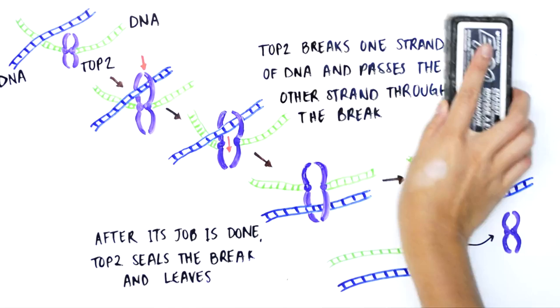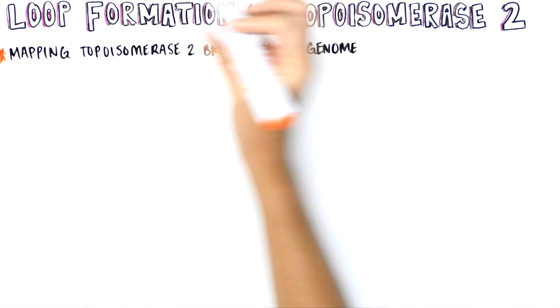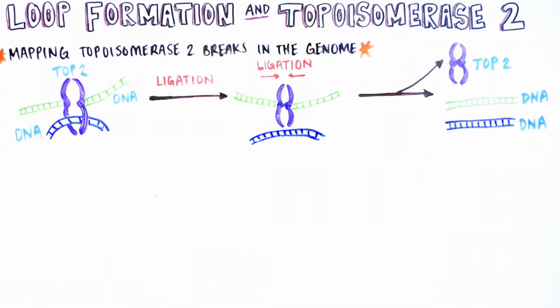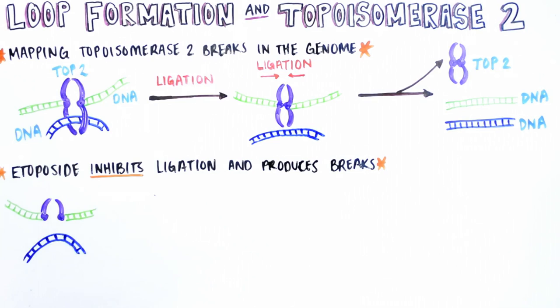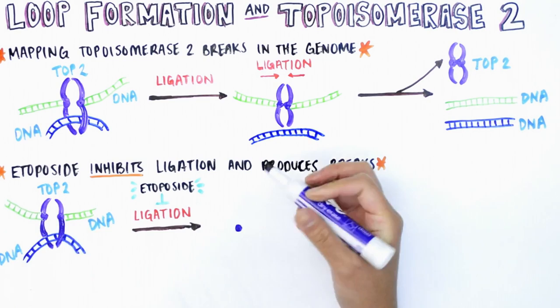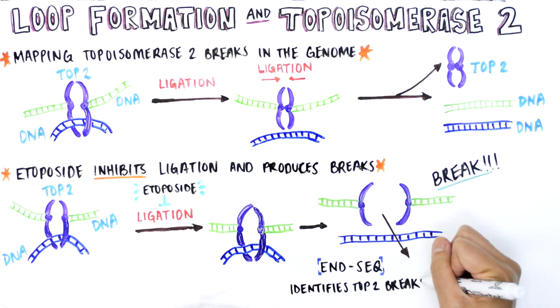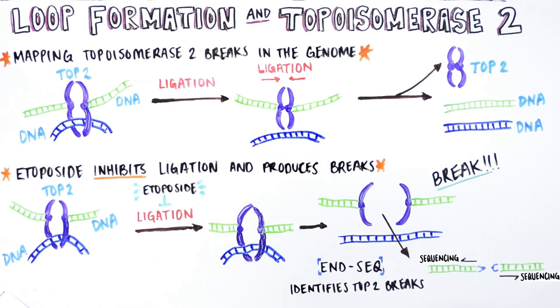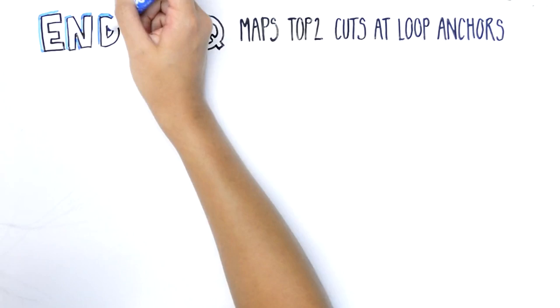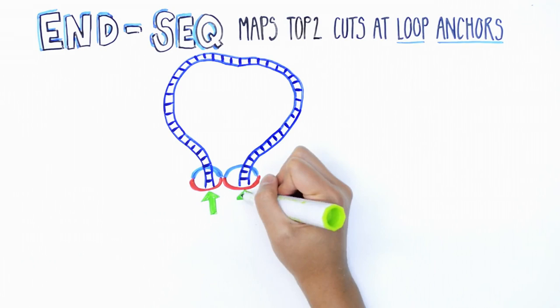Since TOPO2 is continually cutting and pasting together DNA, we first trap TOPO2 on DNA by treating cells with the widely used anti-cancer agent etoposide, which prevents the final DNA ligation step, effectively freezing TOPO2 in its double strand cleavage form. To study the relation between loop extrusion and TOPO2 activity, we mapped endogenous TOPO2 DNA cleavage sites by a method we developed called Nseq, which provides a snapshot of DNA ends genome-wide. Using this technique, we discovered that TOPO2 frequently cuts the DNA at 45 nucleotides just outside of the loop anchors bounded by CTCF and cohesin.